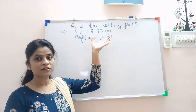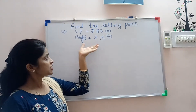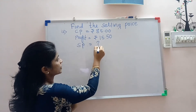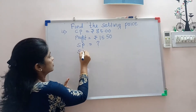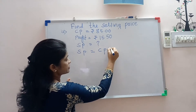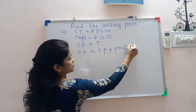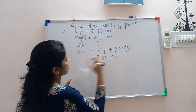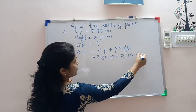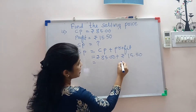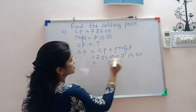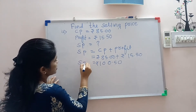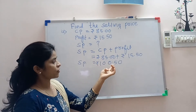Next example: cost price is given rupees 85 and profit is given rupees 15.50. Find out the selling price. Since cost price with profit is given, we add them. Selling price equals rupees 85 plus rupees 15.50. Doing the addition: 5 plus 5 is 10, carry 1; 1 plus 8 plus 9 plus 1 is 10. Selling price is equal to rupees 100.50.